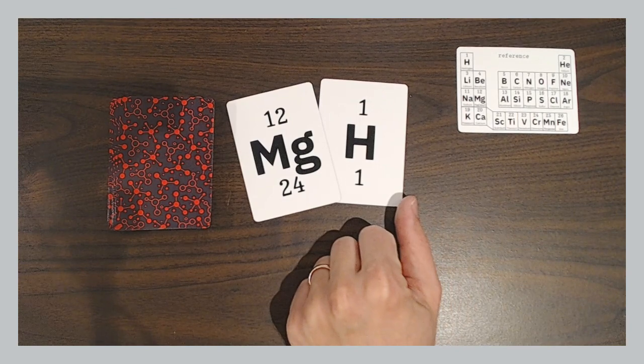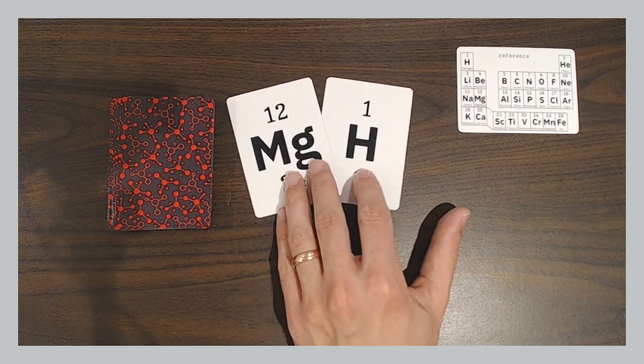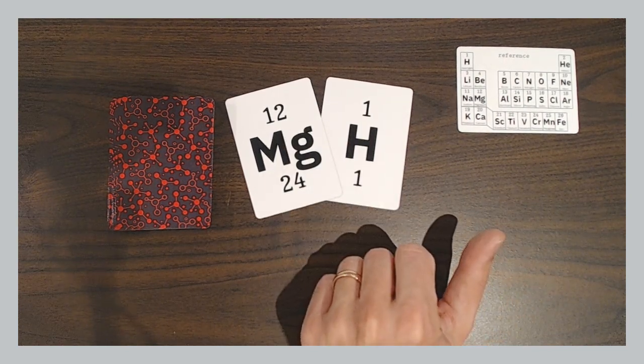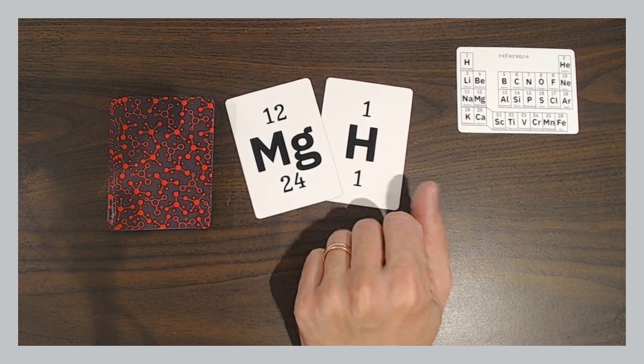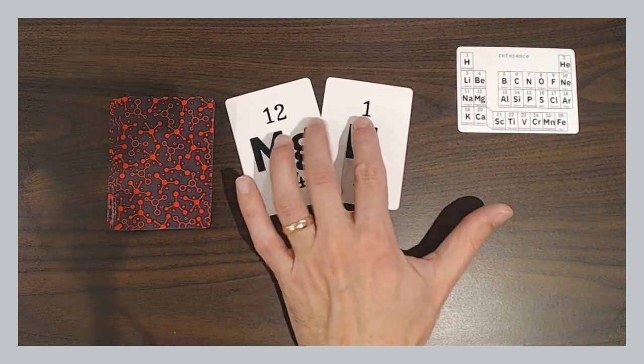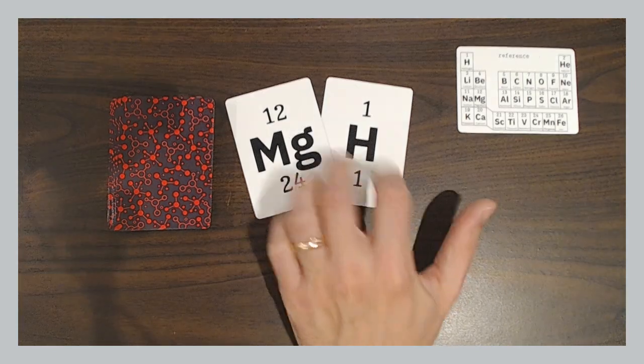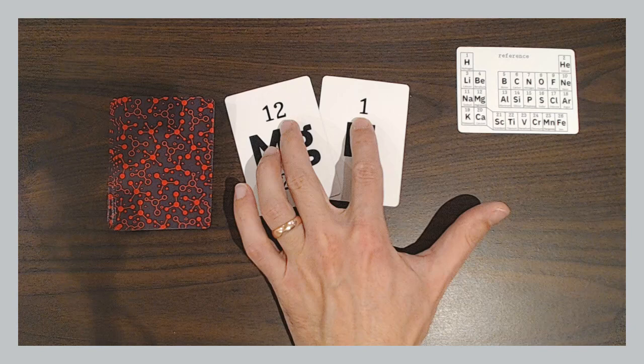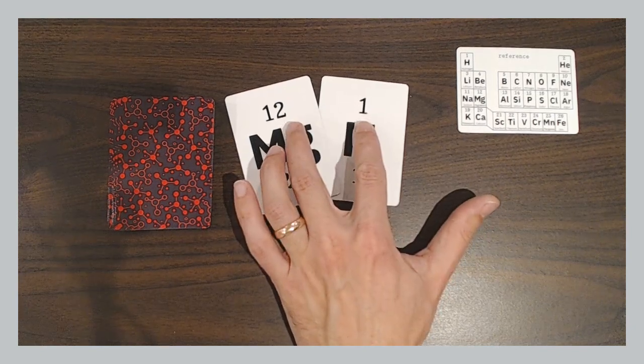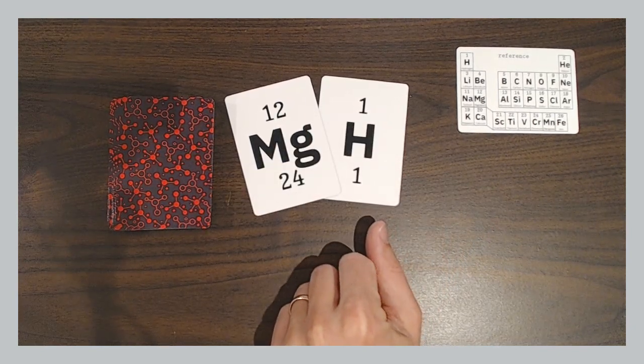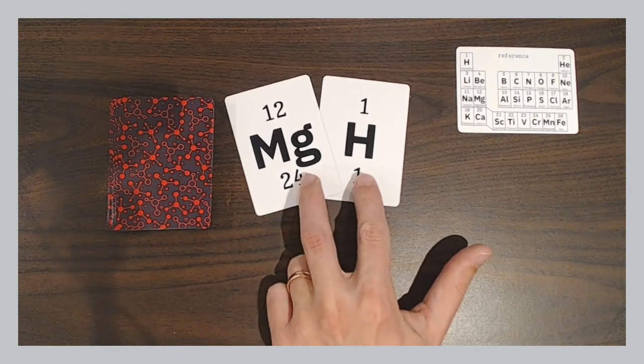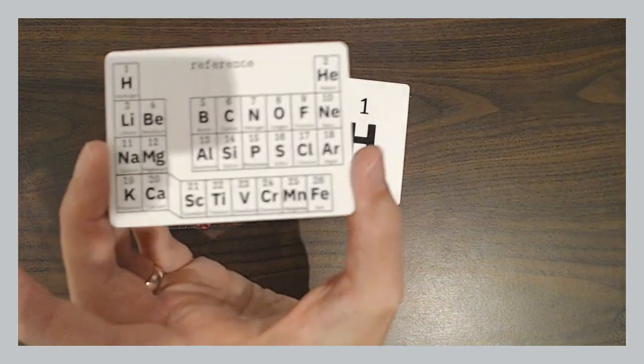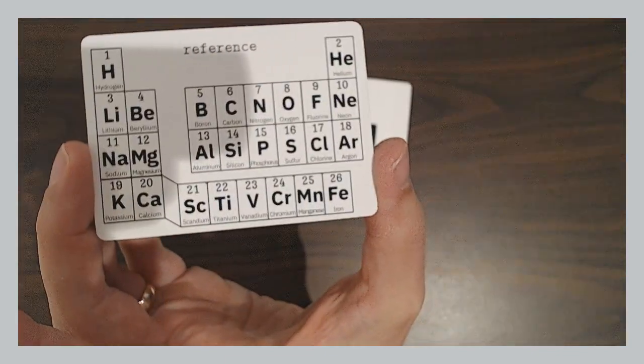If these two were to fuse, what element would you get? Fusion means, now the fusion used in this game is a simplified form of fusion compared to how the real world works. If these two were to fuse and become one atom, and those nucleuses were to just join, so the nucleus of the new atom would have 13 protons, 12 plus 1. So that would be element 13 if these two were to fuse. What is element 13? First one to say that gets those cards as their points. Now you could use this reference if you'd like, and you say, element 13, that's aluminum.